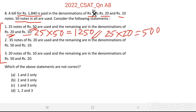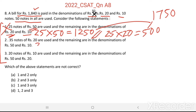Adding these two, we get Rs. 1750, which is less than Rs. 1840. Therefore, the first statement is incorrect.